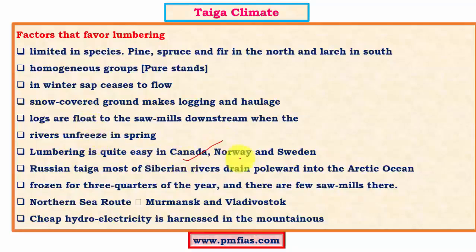Lumbering is important in Canada, Norway, and Sweden, but Russia faces significant disadvantages. In the Russian Taiga, most Siberian rivers drain poleward — northwards — which is a great disadvantage. The rivers are frozen for three quarters of the year due to extreme conditions, and sawmills cannot be established downstream as those areas fall in the Tundra region which is extremely cold. However, cheap hydroelectricity can be harnessed in certain regions using snowmelt and high-ranging mountains to power sawmills.